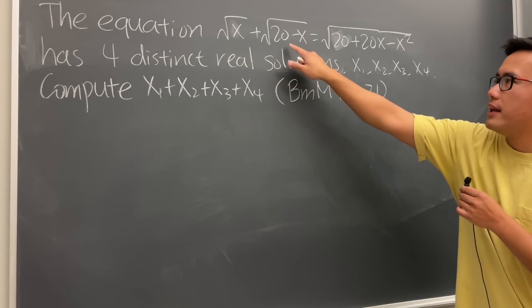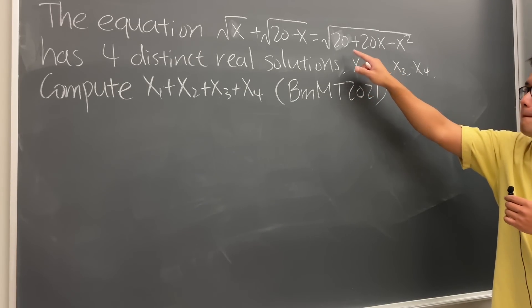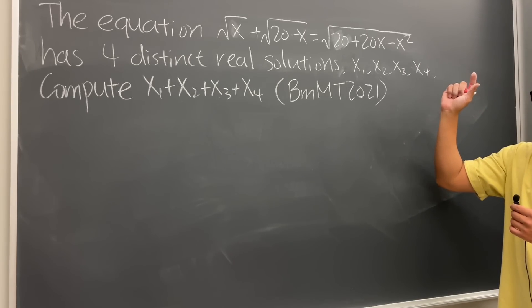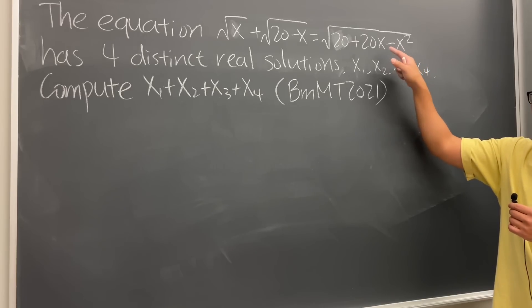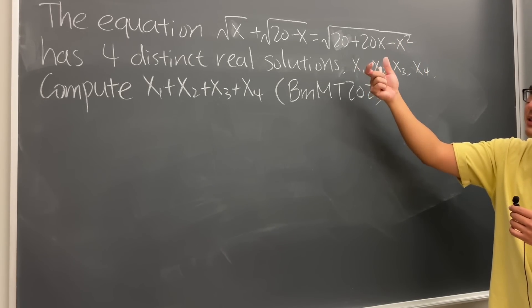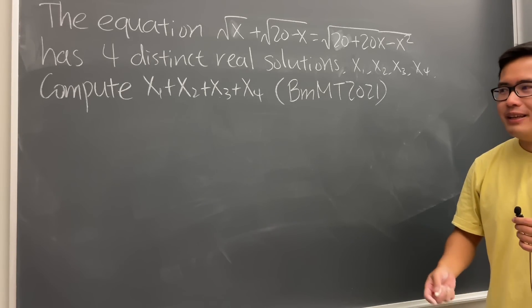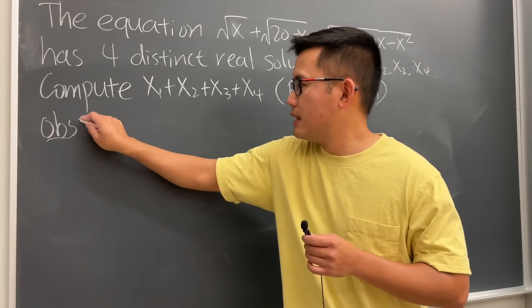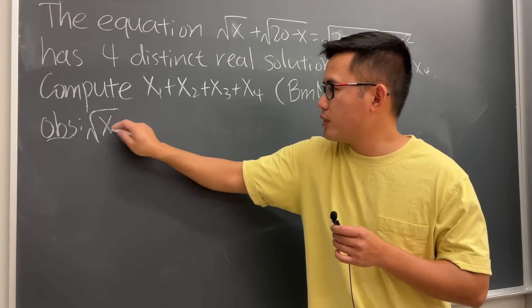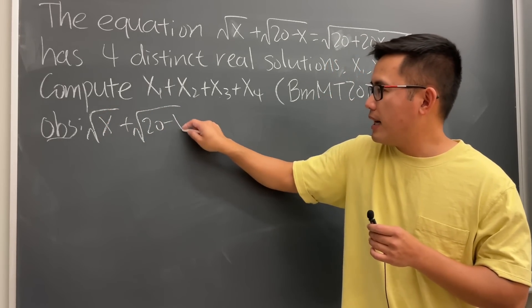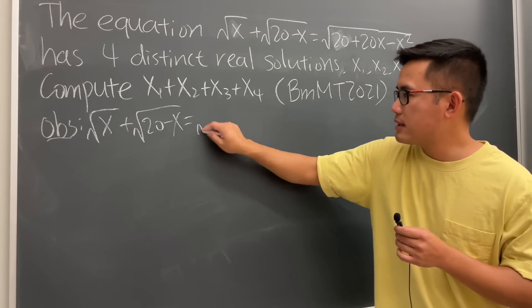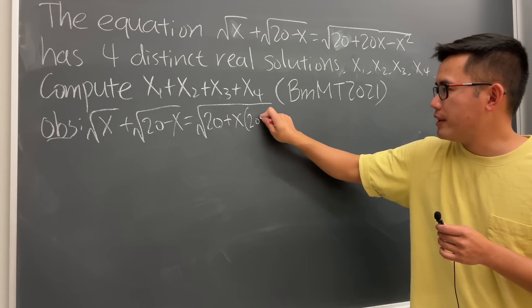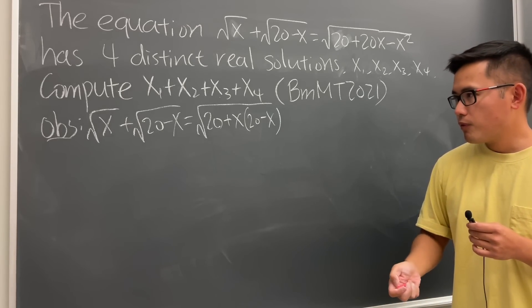Inside here we have x, but this right here is 20 minus x. Here we have 20 plus 20x minus x squared. Notice right here, if we factor out x, then it seems like the inputs are kind of similar. So let's go ahead and make an observation. I'm going to keep the first square root of x the same, likewise the next one. But for the third one, let's factor the x. So it's square root of 20 plus x times 20 minus x.